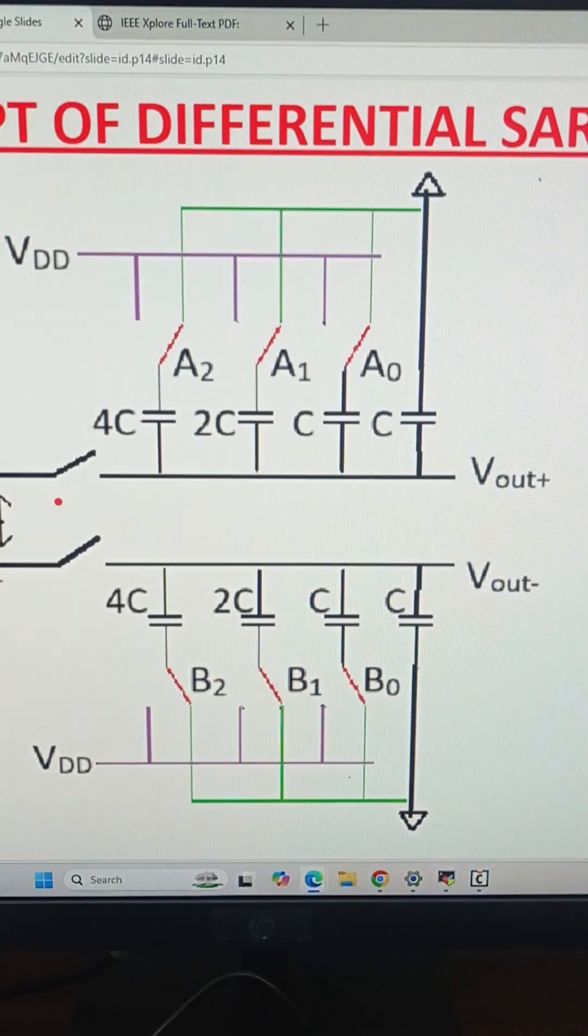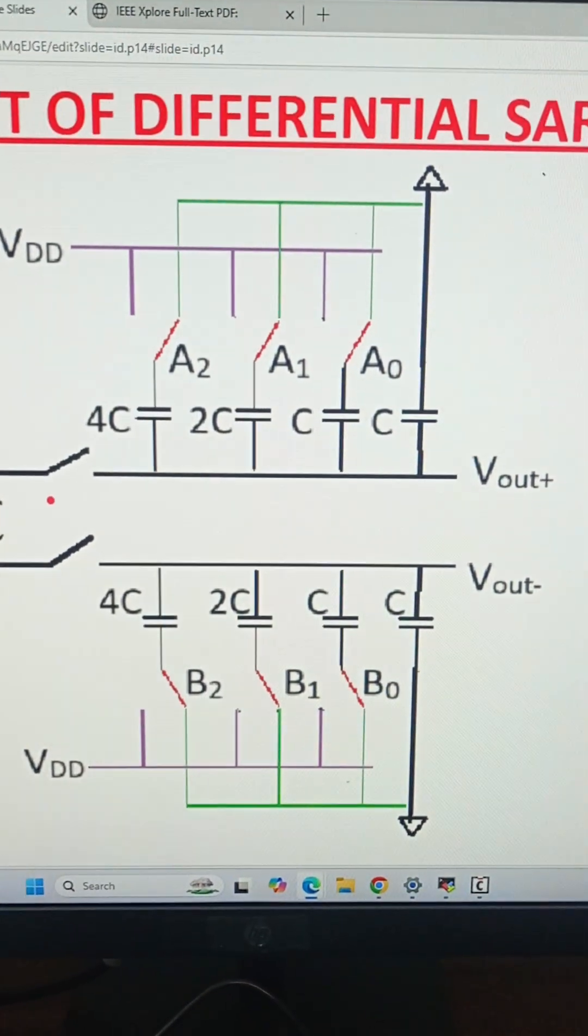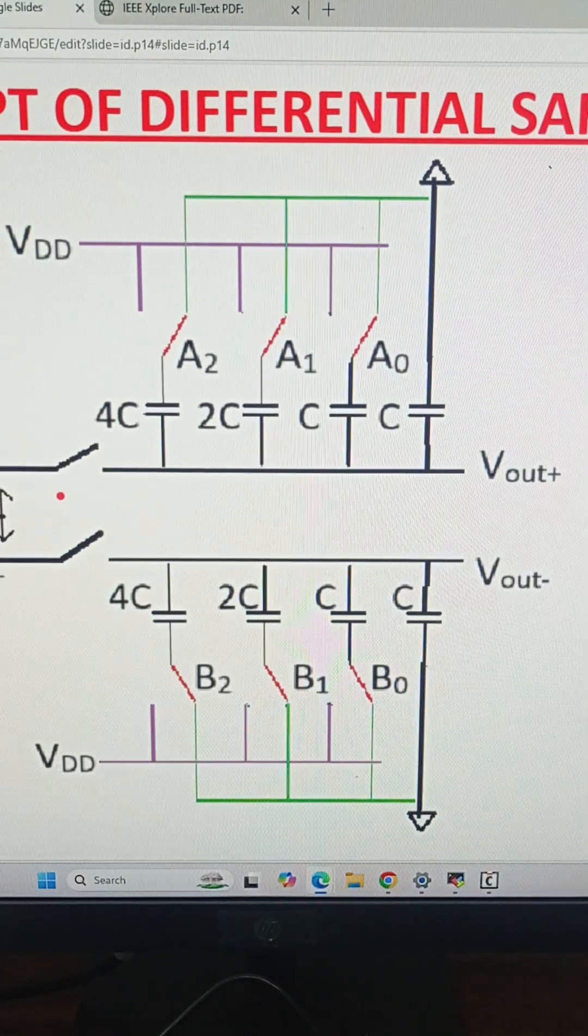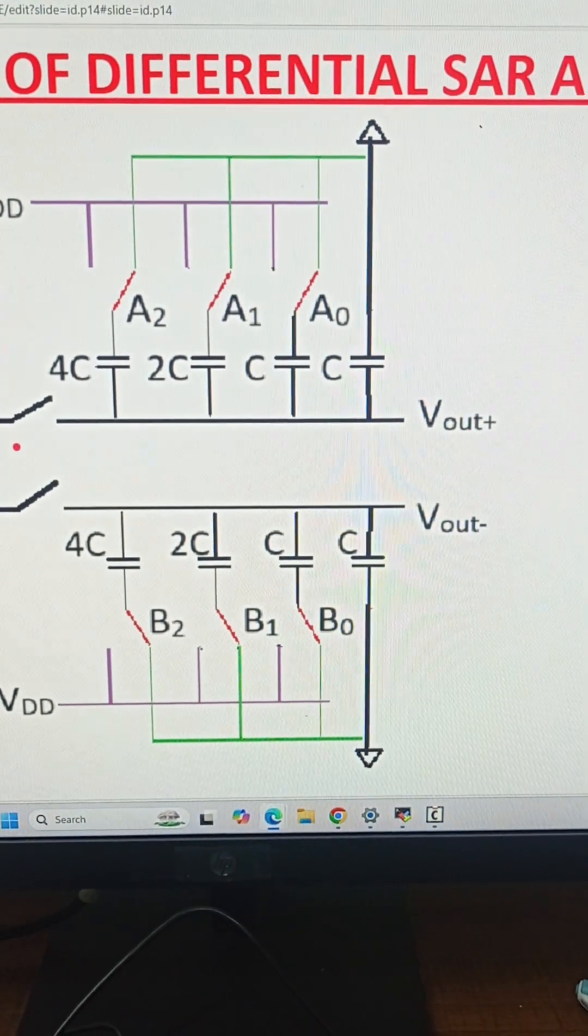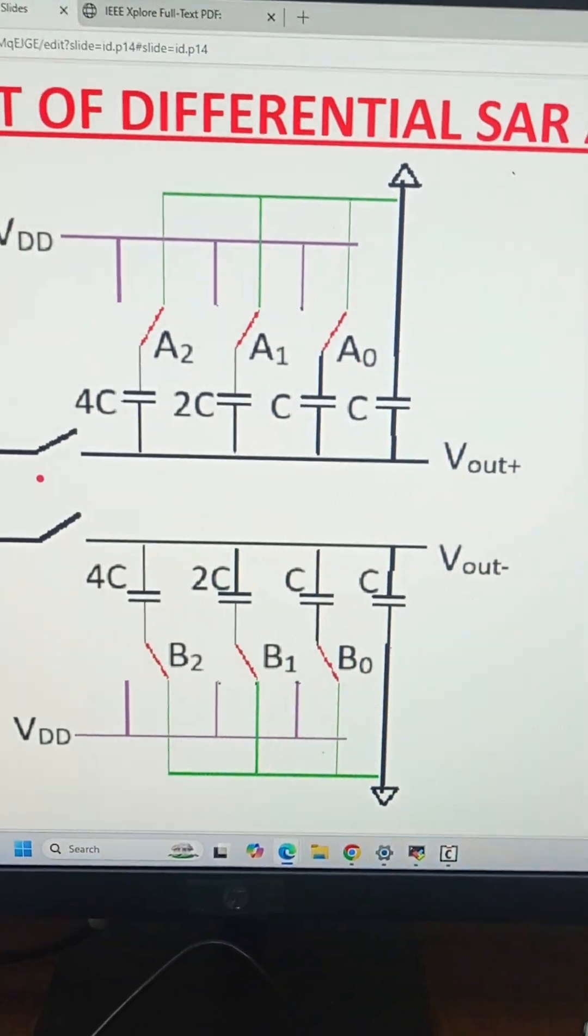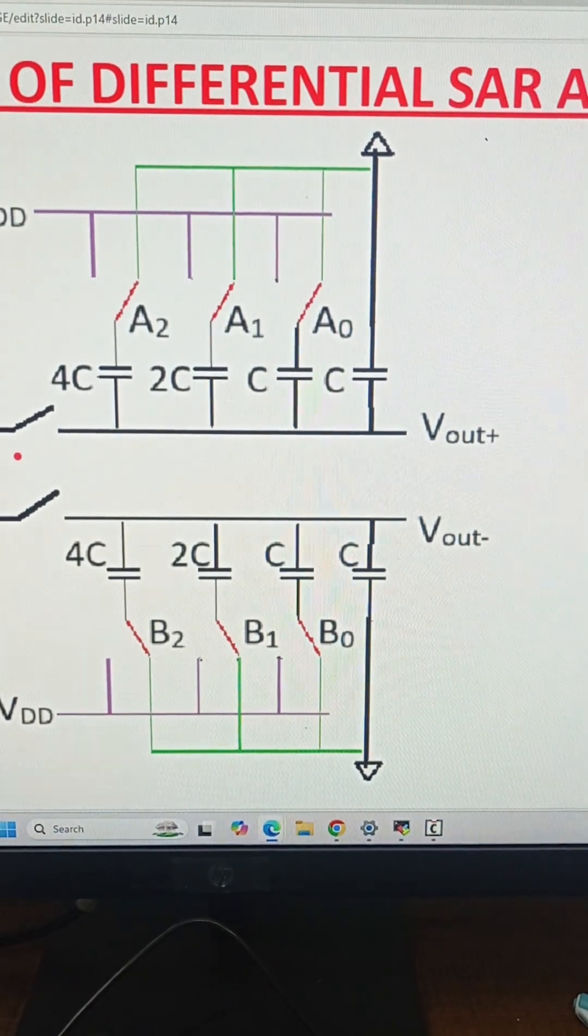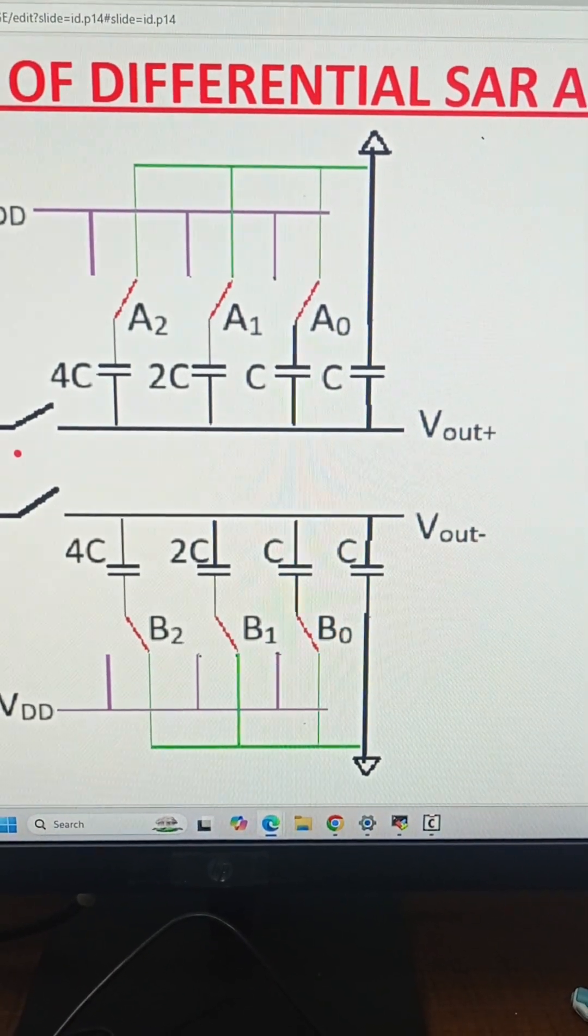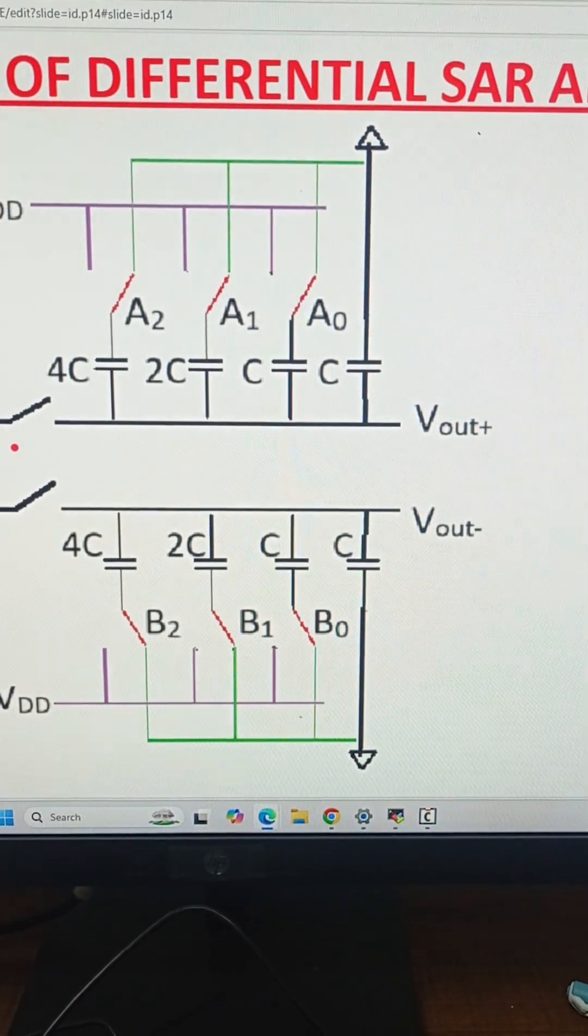The next bit is resolved as 0, and now the switch connected to A1 will be connected to V_DD. This will increase V_out+ by 0.25 volts; the new value of V_out+ will be 0.85 volts. But still V_out- is greater than V_out+.